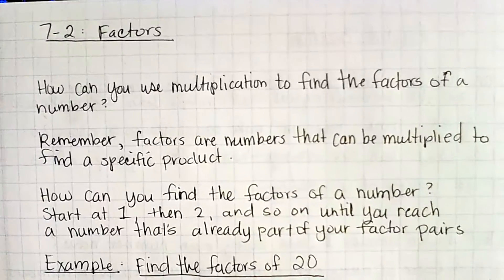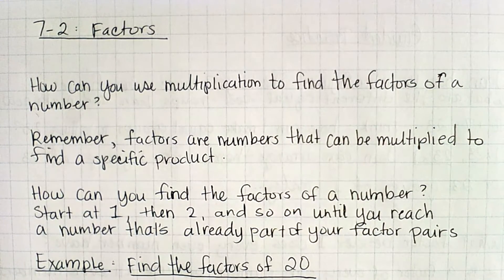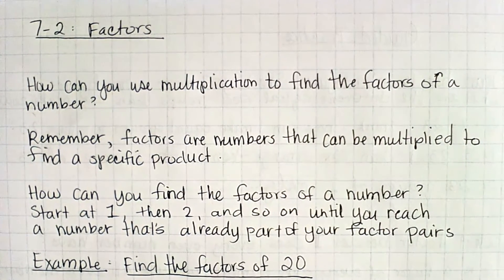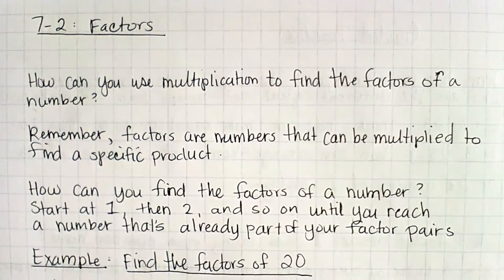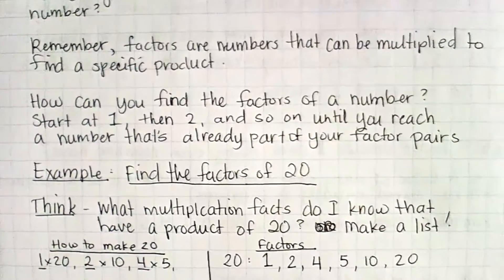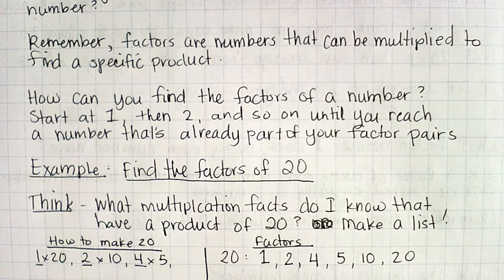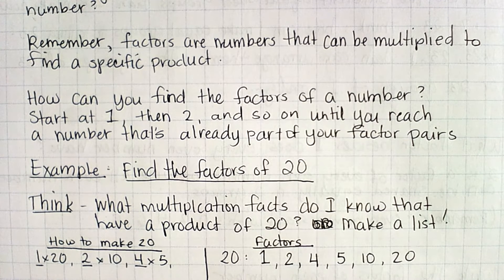For our notes, we have our title: Topic 7-2 Factors. What we're thinking about in this lesson is how can you use multiplication to find the factors of a number. Remember, factors are numbers that can be multiplied to find a product. You're going to start with 1 and 2 and so on — 1 times anything will always be a factor. If it's an even number, you can divide it by 2, then see if you can divide it by 3 and 4 and so on.